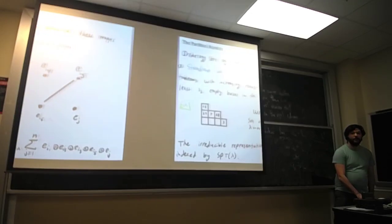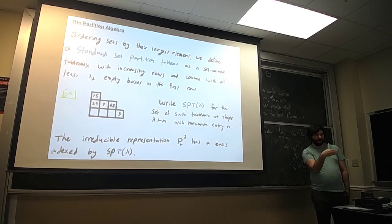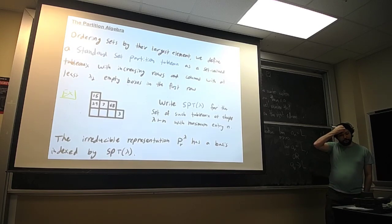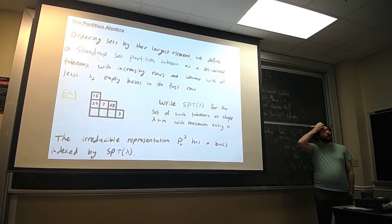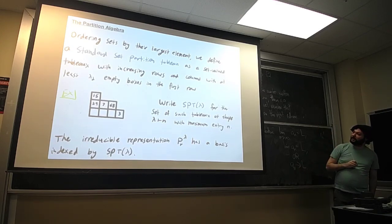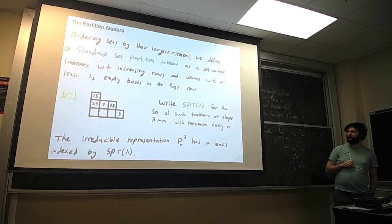I want to talk about representations of the centralizer algebra. To understand these representations, instead of filling tableaux with numbers, we want to fill them with set values. If we order sets by their largest element, we can define a standard set partition tableau as a set-valued tableau with increasing rows and columns, with at least n minus 2r empty boxes in the first row.